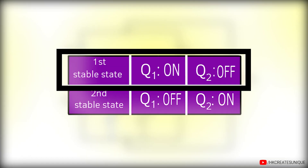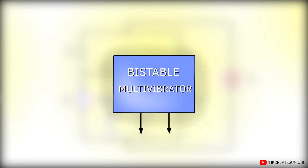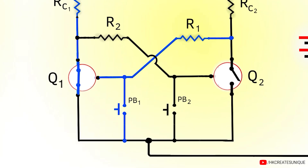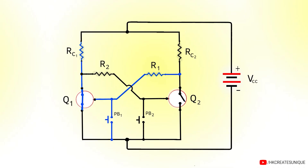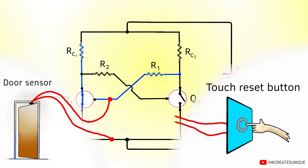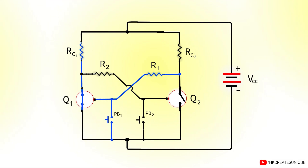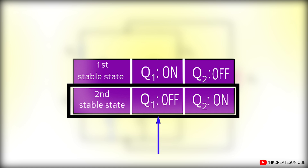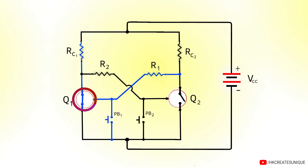To change this stable state, we need to externally give inputs to the circuit — this is called triggering. We have two push buttons for this purpose, but it can be anything: sensors or other trigger sources. The current stable state is Q1 on and Q2 off. To trigger it to the second stable state, Q1 must be off and Q2 must be on. We can do this by pressing the first push button to forcefully turn Q1 off.